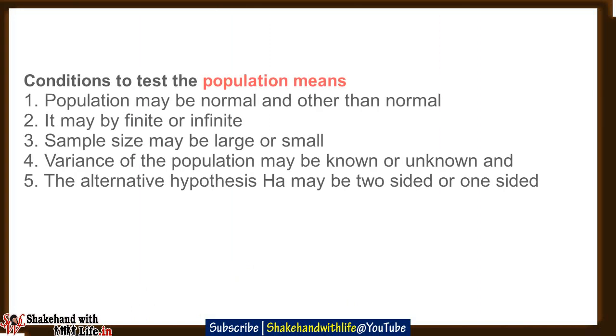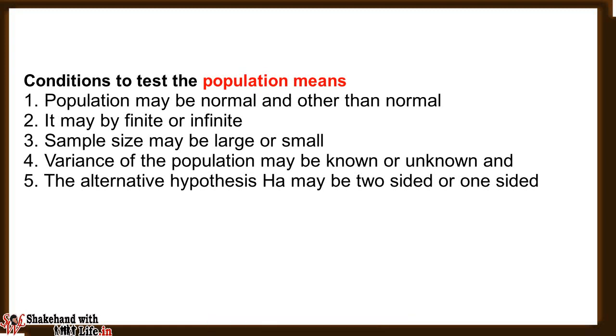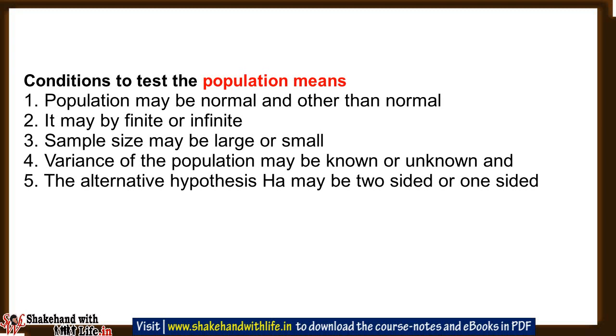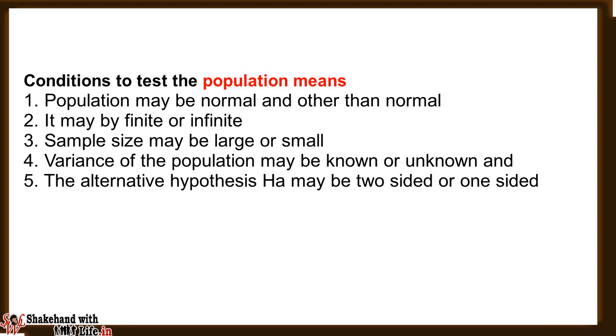First, we talk about the tests of hypothesis about population means. The mean of the population can be tested under different conditions: the population may be normal or other than normal, it may be finite or infinite, the sample size may be large or small, the variance of the population may be known or unknown, and the alternative hypothesis HA may be two-sided or one-sided. To test a hypothesis about population means, we can use either the Z test or T test, but in this video we will study only the Z test with an example.